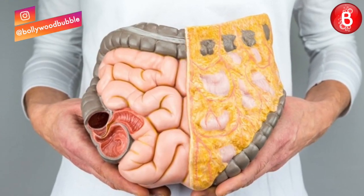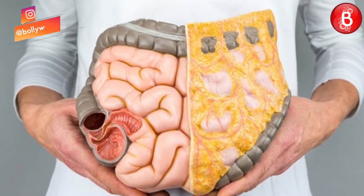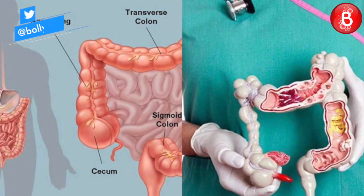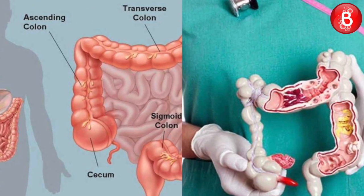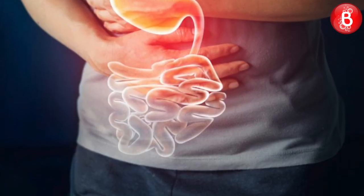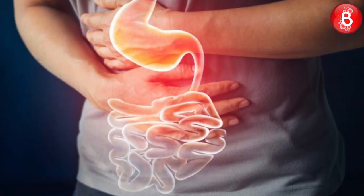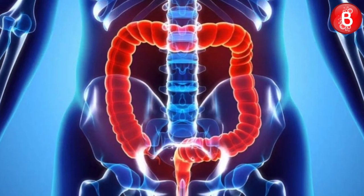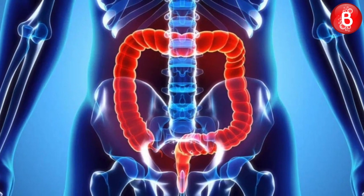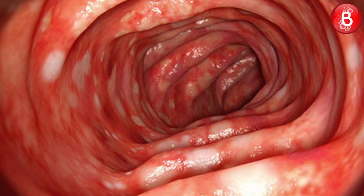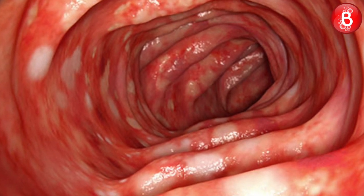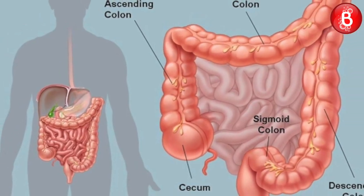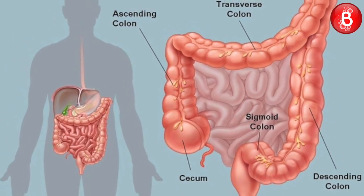Colitis is a chronic digestive disease characterized by inflammation of the inner lining of the colon. Infection, loss of blood supply in the colon, inflammatory bowel disease, and invasion of the colon wall with collagen or lymphocytic blood cells are all possible causes of an inflamed colon. Having cancers and certain treatments for cancer such as chemotherapy can put you at a higher risk of developing an infection and sepsis.